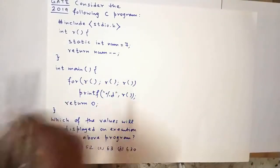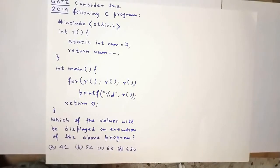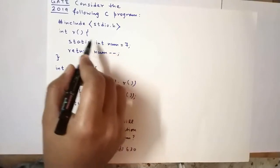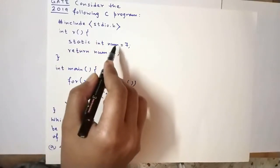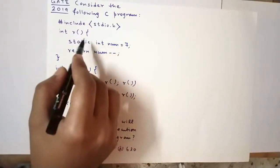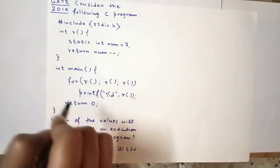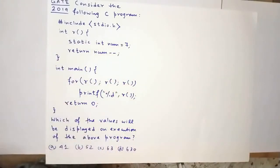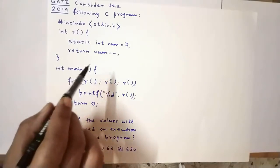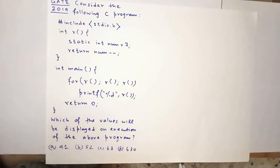It has the name num. Why am I calling it local? Because it is declared inside the body of this function. Had this variable num been declared outside any of these functions, it would have been a global static variable, and its properties would have differed slightly. So here we can say that num is a local static variable, because it is declared inside the body of function r.